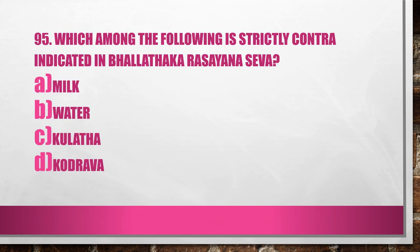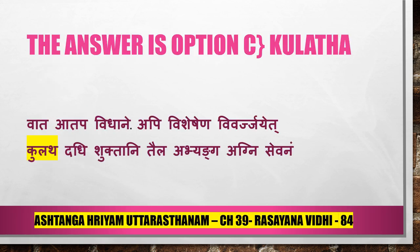Question 95. Which of the following is strictly contraindicated in Valladhana Rasayana Seva? A. Milk, B. Water, C. Kulatha, D. Kodrava. The answer is Option C, Kulatha. From the verse: Vada Adhapavidhane, Abhisheshena Vivarchayet — Kulatha, Shukthani, Thaila Abhyanga, Agni Sevanam are to be avoided. This Brahma Rasayana is a big yoga; reference is Ashtanghradayam Uttarastanam Chapter 39, Drazayana, Sloka 84.